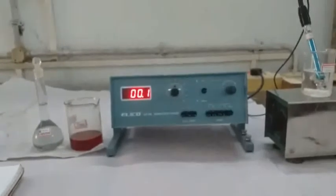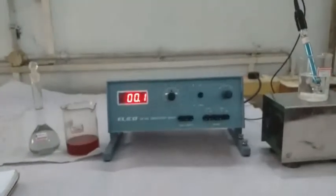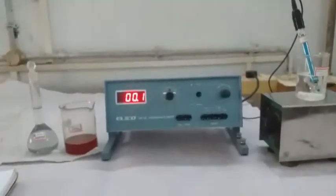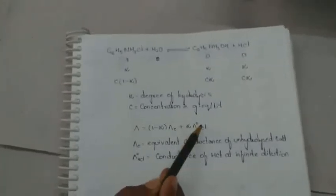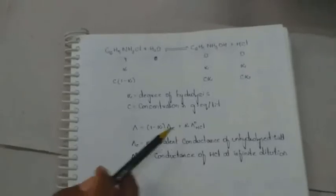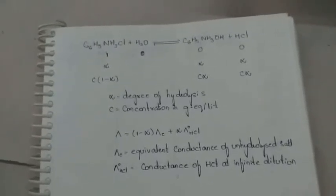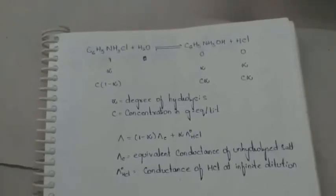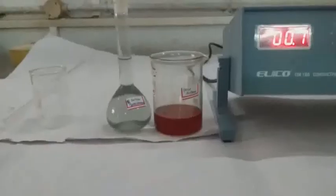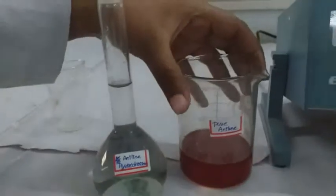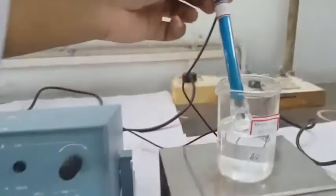Thus, if the equivalent conductance of the above equilibrium solution is determined experimentally, it will be the sum of the conductance of (1−α) gram-equivalents of aniline hydrochloride and α gram-equivalents of hydrochloric acid. Here λ_HCl is the conductance of HCl at infinite dilution and the other term is the equivalent conductance of the unhydrolyzed salt. The conductance of the unhydrolyzed salt is determined by adding excess aniline to aniline hydrochloride solution, which suppresses hydrolysis. Apparatus and chemicals needed: M/32 aniline hydrochloride, pure aniline, conductivity meter, conductivity cell, and magnetic stirrer.